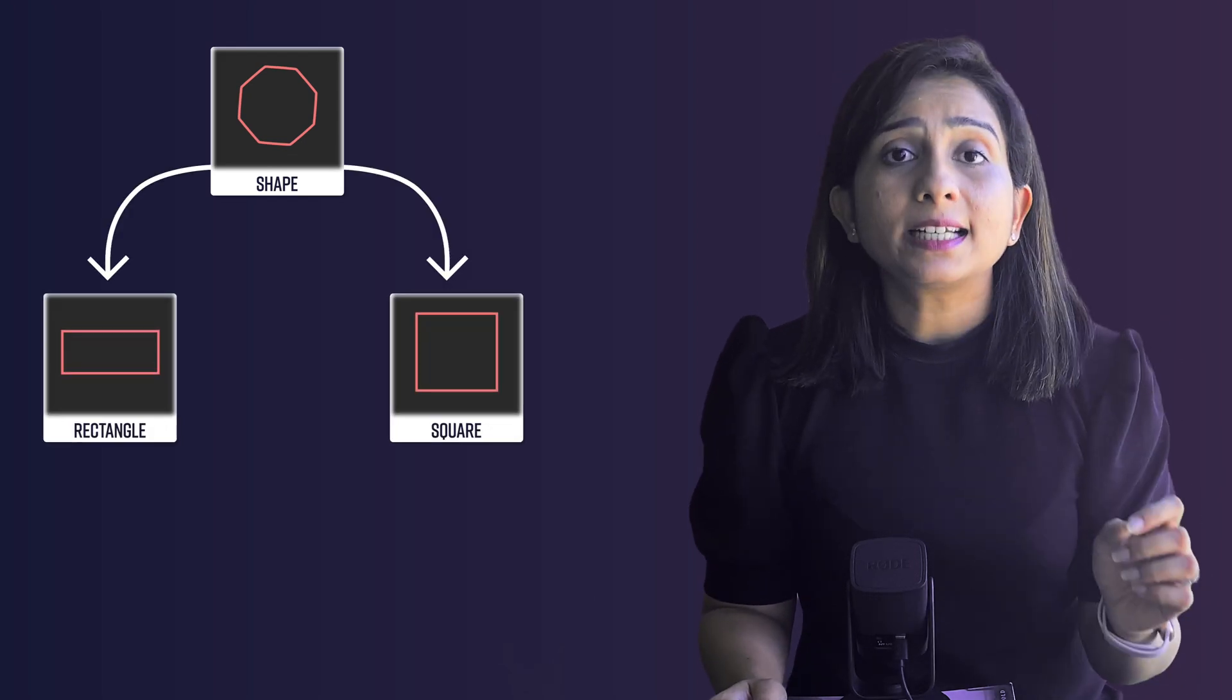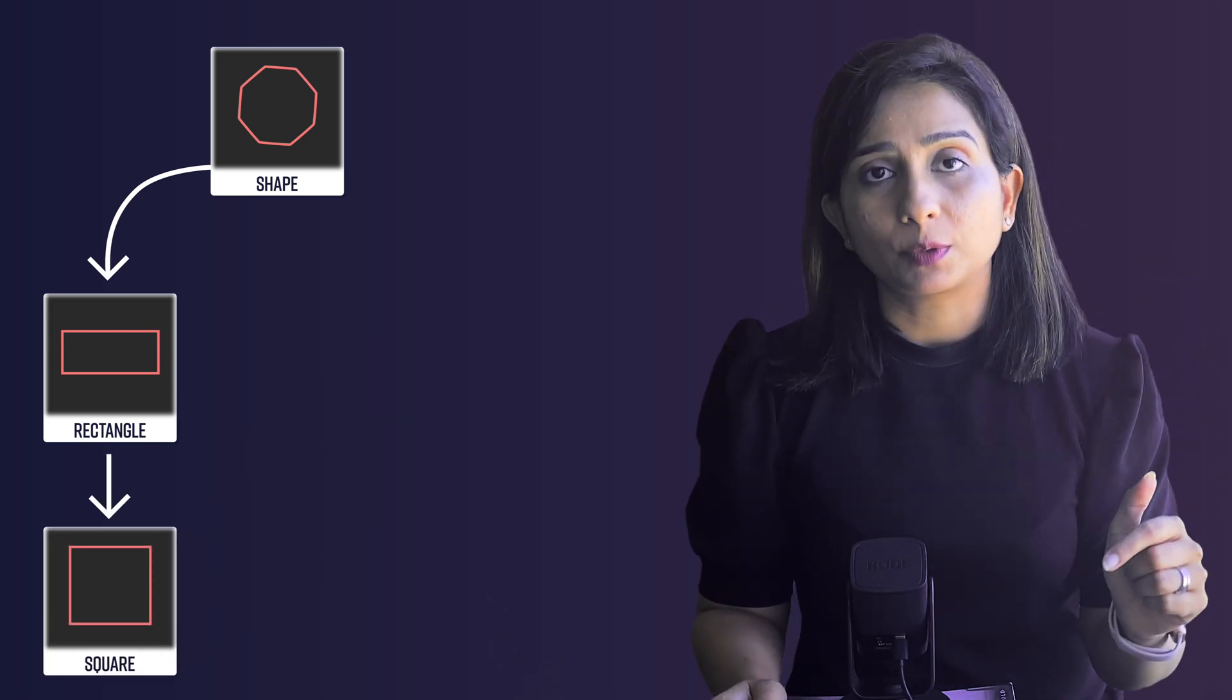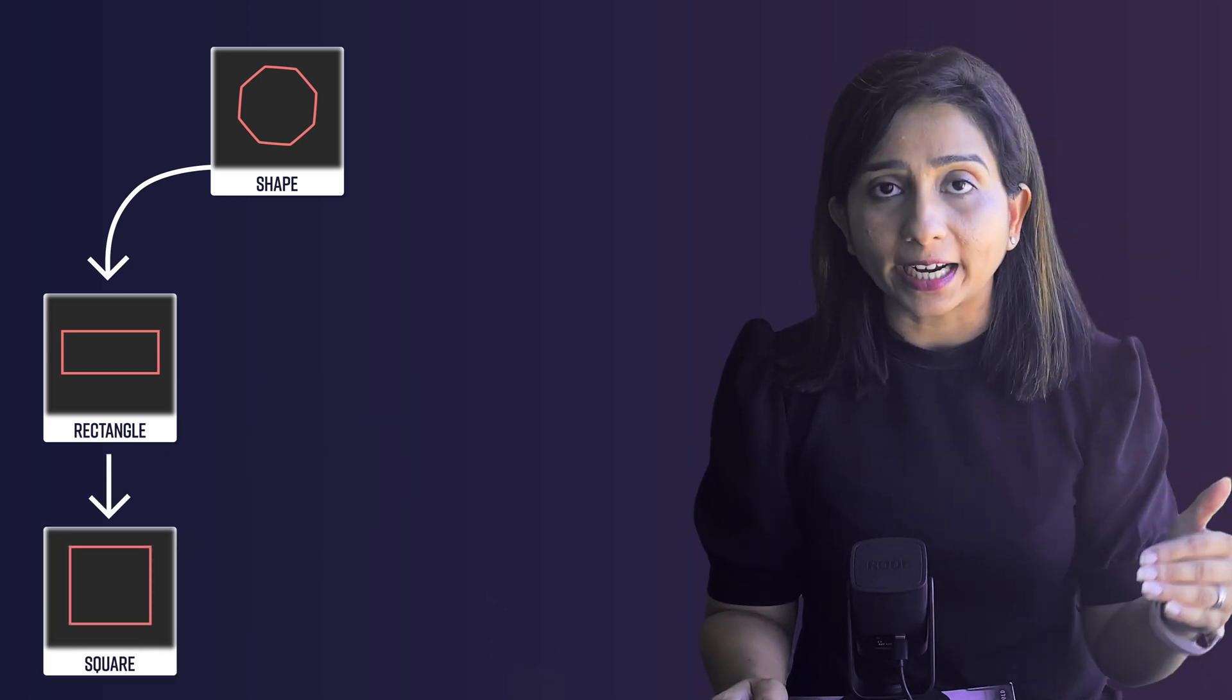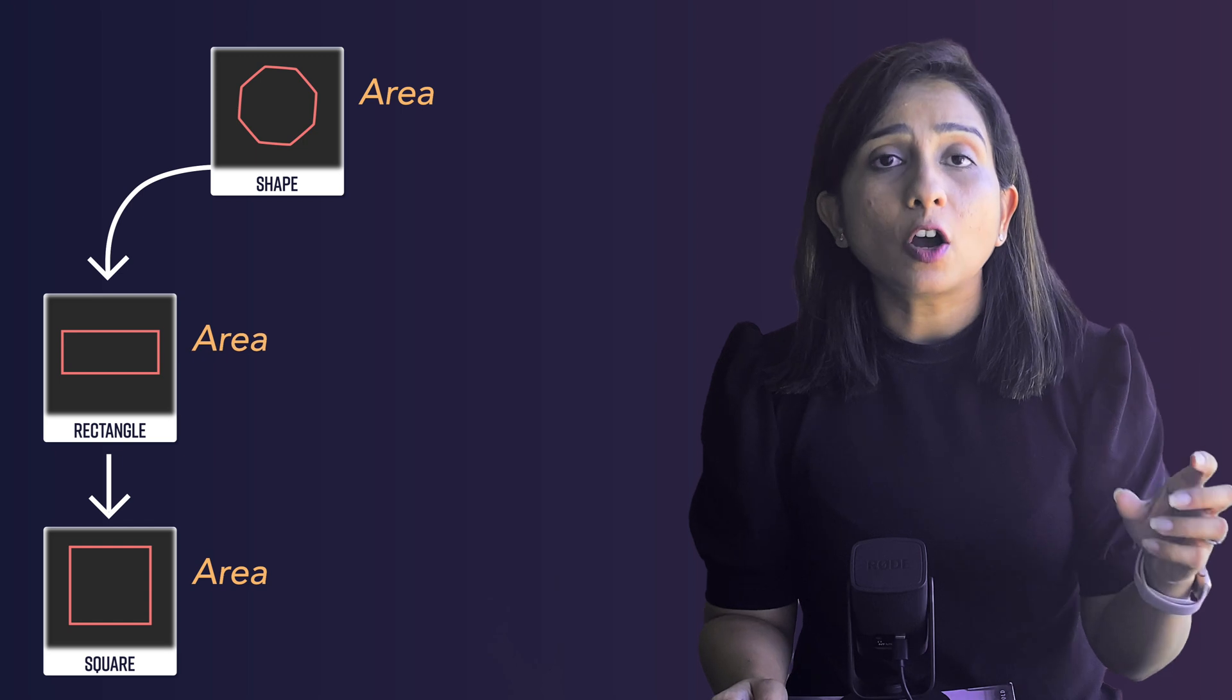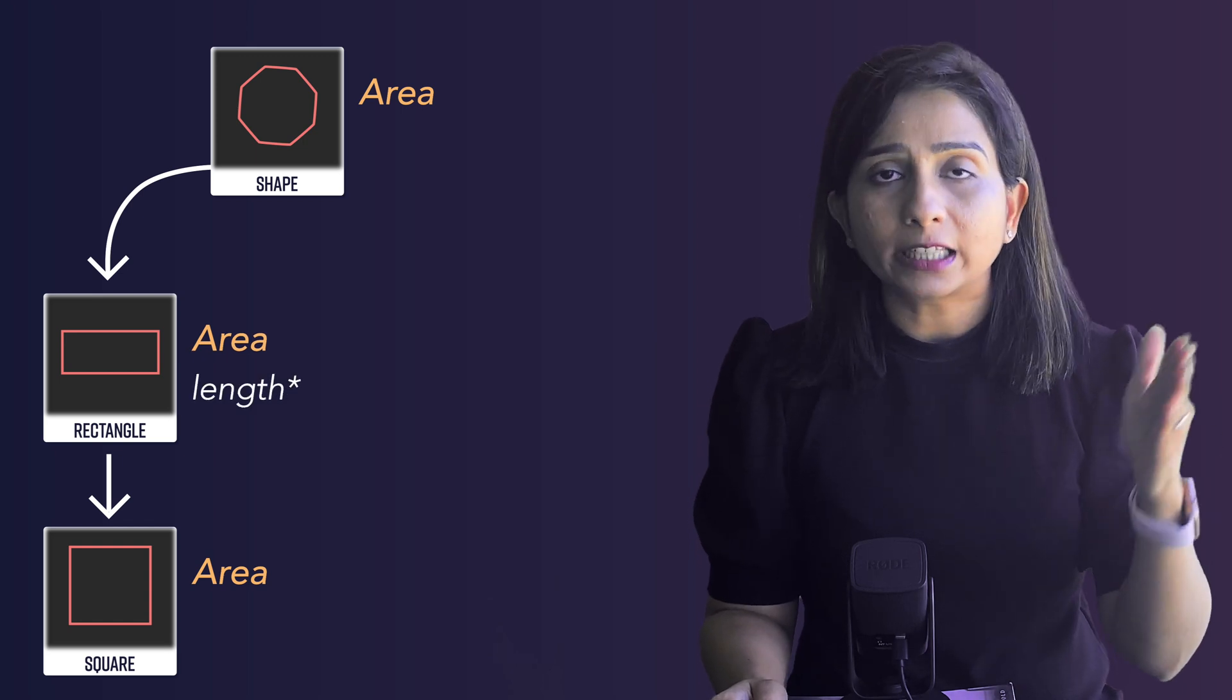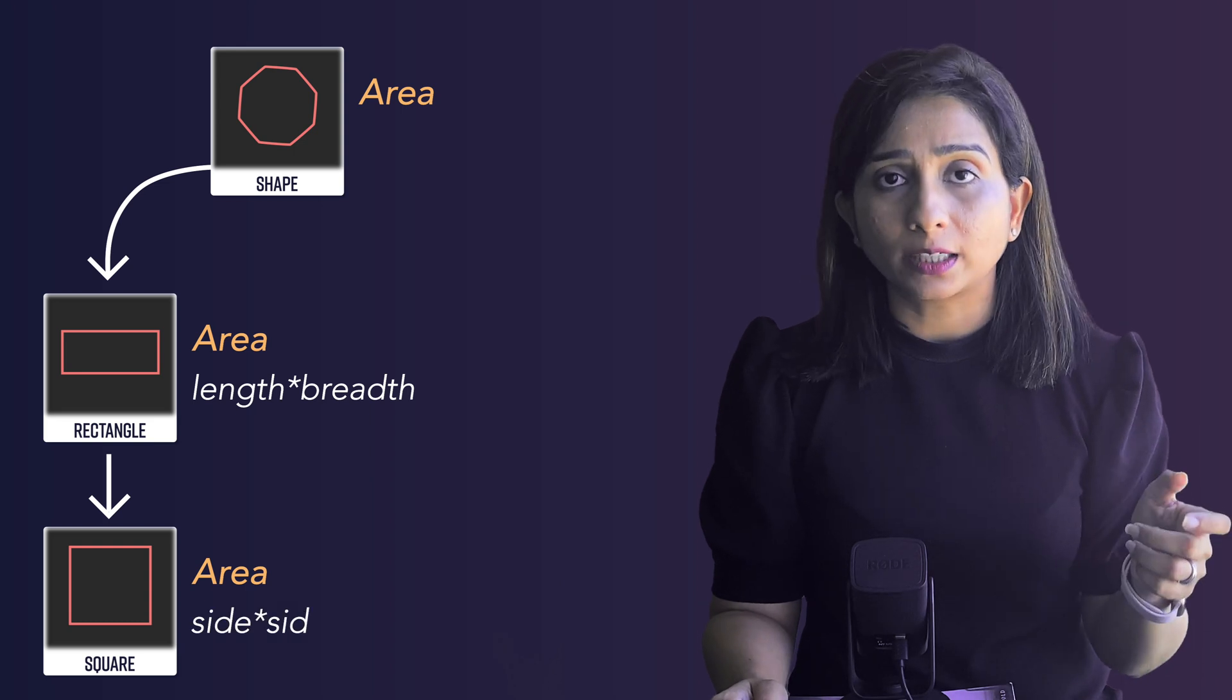If I talk about a simpler example then let's go back to the example that we have used in inheritance. You have a Shape class. Rectangle class and Square class extend from Shape class. Let's say we extend Square class from Rectangle class instead of Shape class. So now Square class becomes the child of Rectangle and Rectangle class is the child of Shape class. When we talk about area, the way area of Rectangle is calculated is length into breadth and the way area of Square is calculated is side into side.